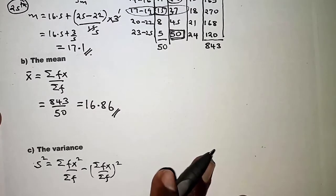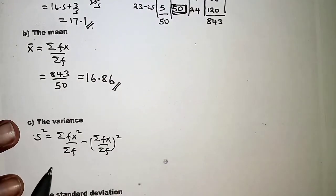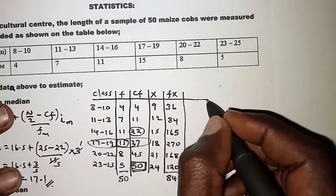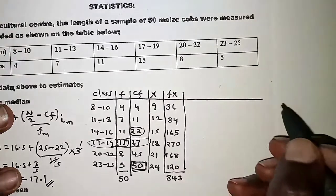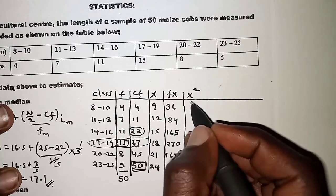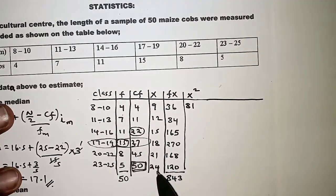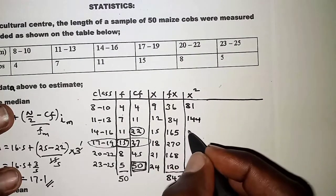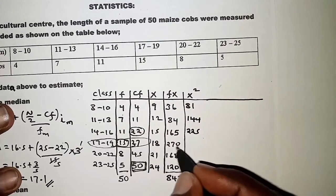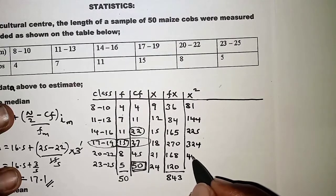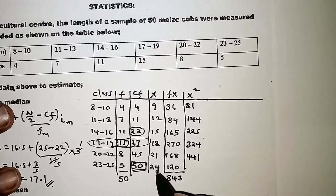We add a column for x². Squaring each midpoint: 9² = 81, 12² = 144, 15² = 225, 18² = 324, 21² = 441, and 24² = 576.